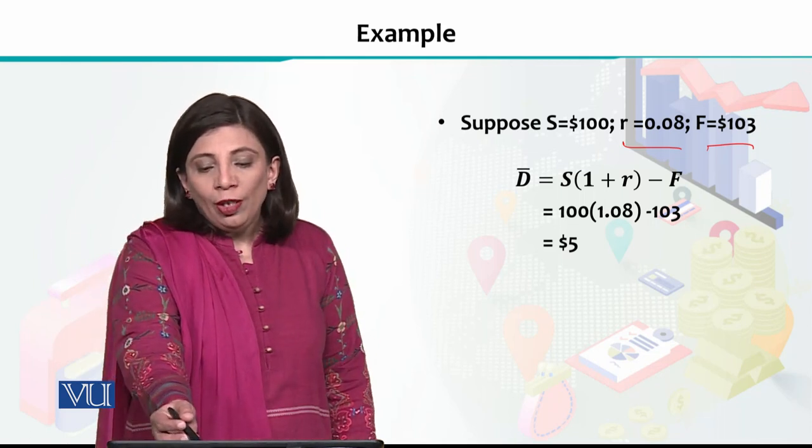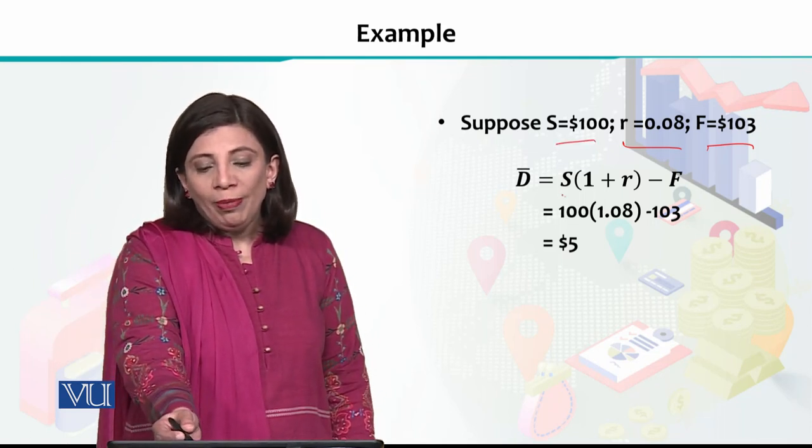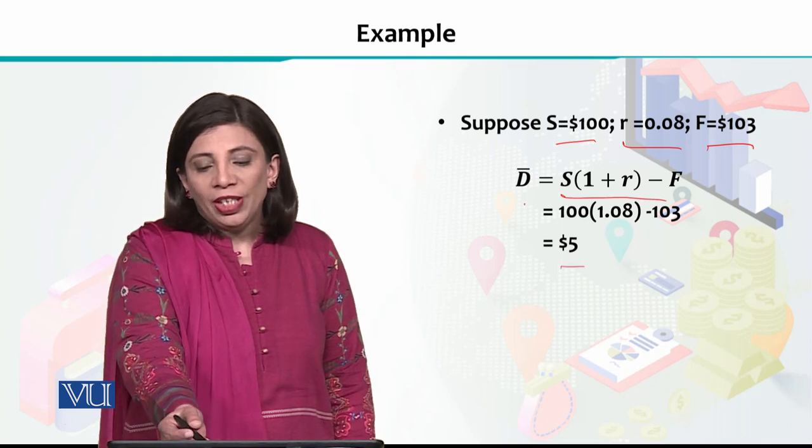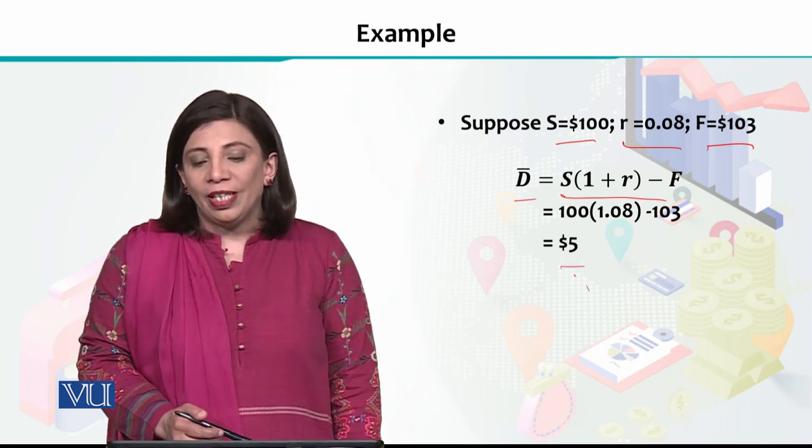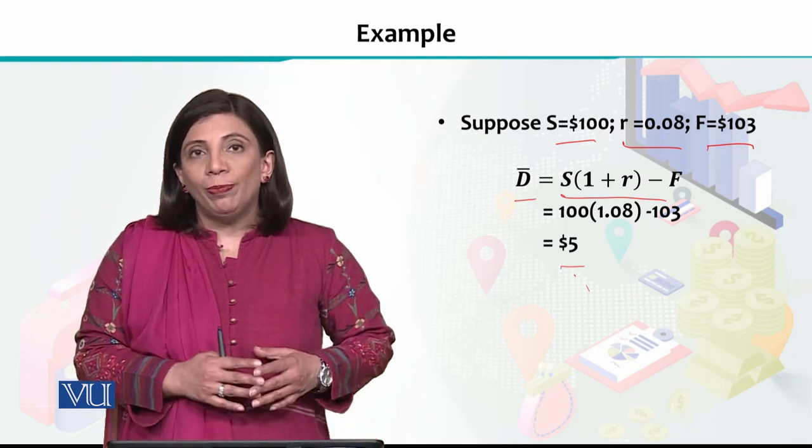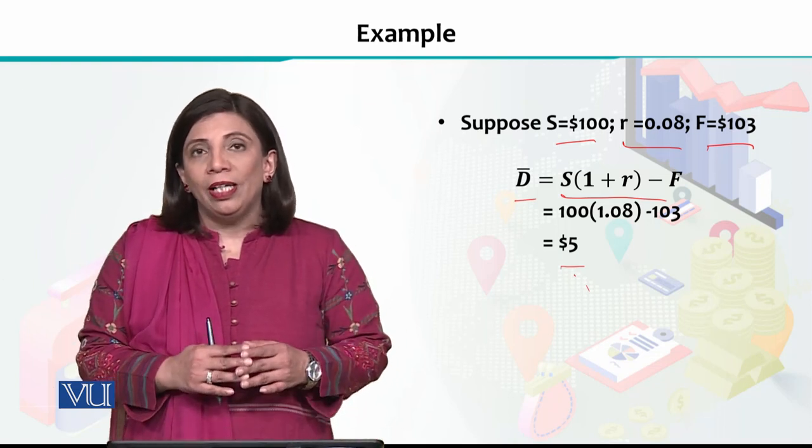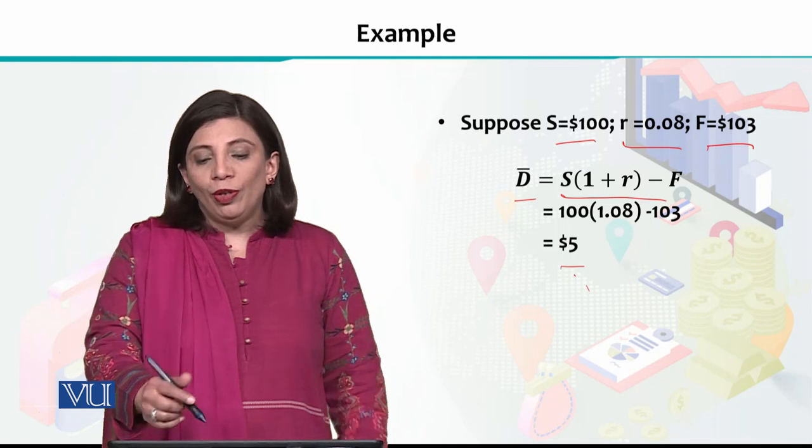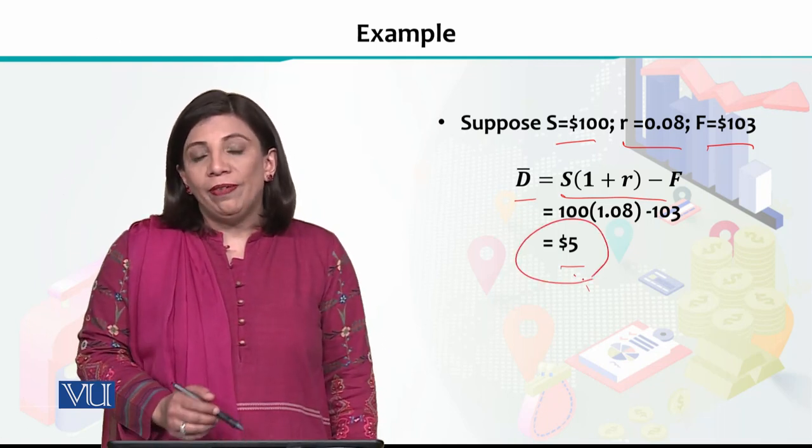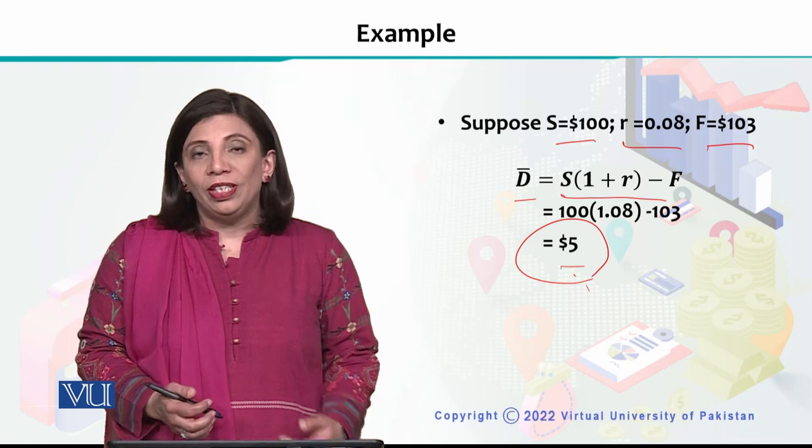So you will plug these three values in this formula. Then you will have the value of the dividend. So you will know that for a certain spot price and future price, and given risk premium, you will be able to get the implied dividend, which will be $5. So this way, you will be able to get the implied dividend value from the formula.